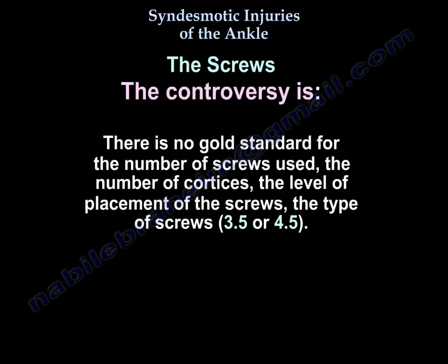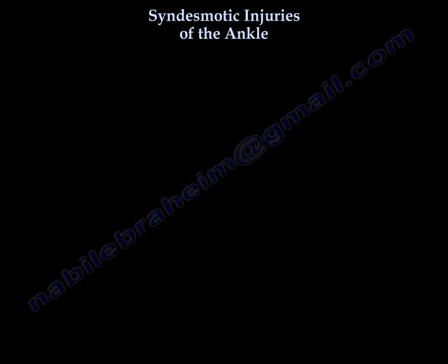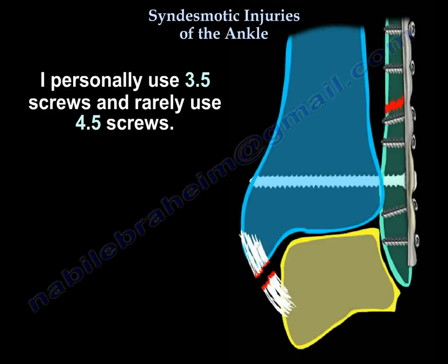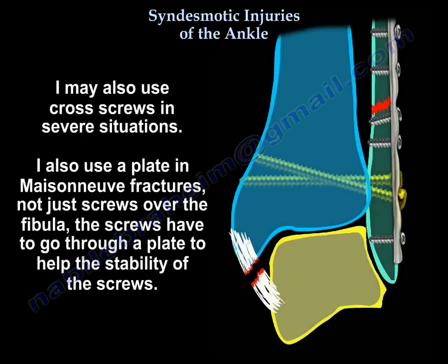There is controversy — there is no gold standard for the number of screws, the number of cortices, the level of placement of the screws, the type of screws (3.5 or 4.5 mm). Another area of controversy is when the patient will bear weight after fixation of an ankle fracture that needed syndesmotic screw fixation. I personally use 3.5 mm screws and rarely use 4.5 mm screws. I may use cross screws in severe situations. I also use a plate in Maisonneuve fractures, not just screws over the fibula.